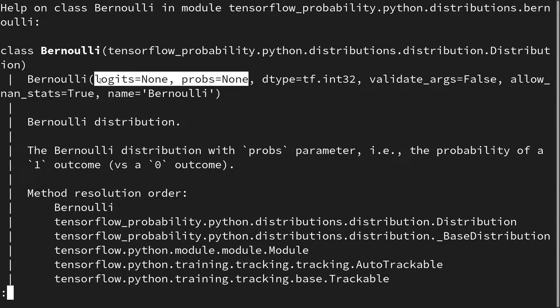Actually, interestingly, logit is the first input as it is more commonly used in the context of TensorFlow Probability. This is also the reason why we always use named arguments when we instantiate the Bernoulli.